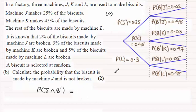And to work out this probability you've just got to go along this branch here. So it's going to effectively be the probability that it came from machine J and we'll multiply that with the probability that it is not broken given that it came from machine J.